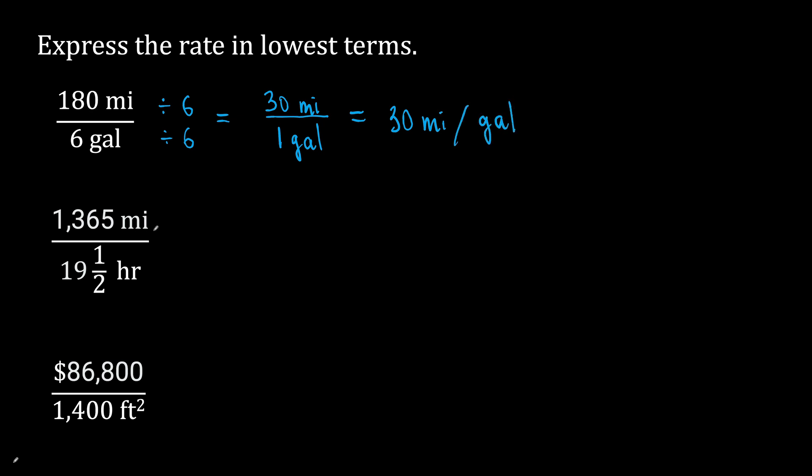The second rate shows miles to hours, and the denominator looks complicated. Let's rewrite 19 and one-half as 19.5. So we have 1,365 miles over 19.5 hours.